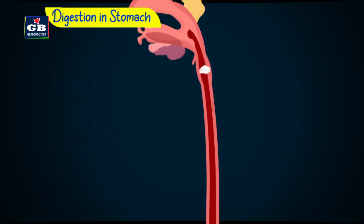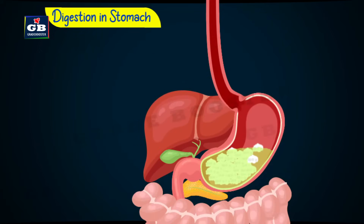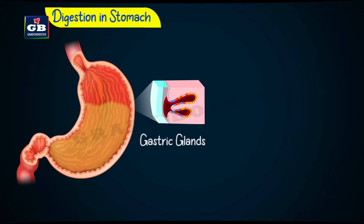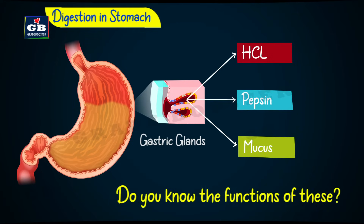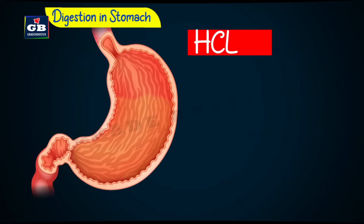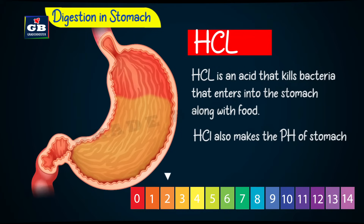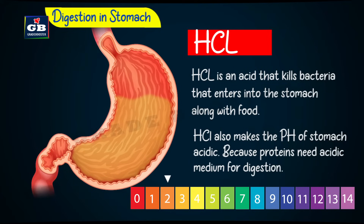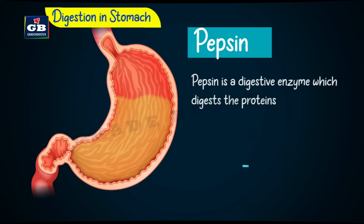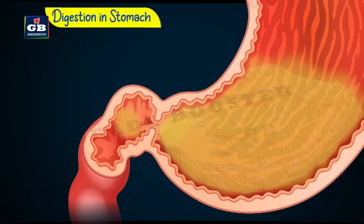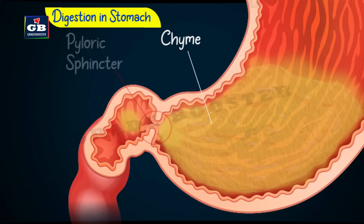Food from the mouth enters the stomach through the esophagus. The stomach is a bag-like organ that expands when food enters into it. The walls of the stomach have gastric glands, which secrete HCl, pepsin, and mucus. HCl, that is hydrochloric acid, kills bacteria that enters the stomach along with food, and makes the pH of the stomach acidic because proteins need an acidic medium for digestion. Pepsin is a digestive enzyme that digests proteins. Mucus protects the walls of the stomach from the action of hydrochloric acid. The food that is partly digested in the stomach turns into a semi-solid paste called chyme, which is released into the small intestine part by part by a sphincter muscle called the pyloric sphincter.